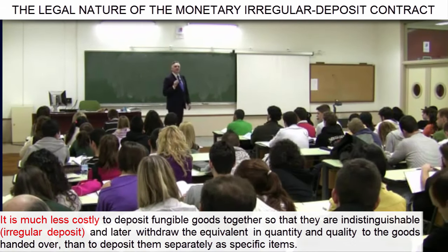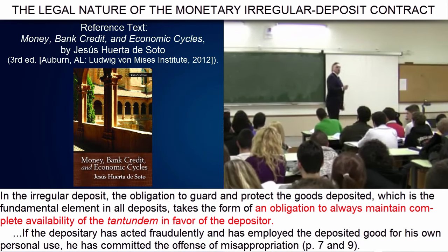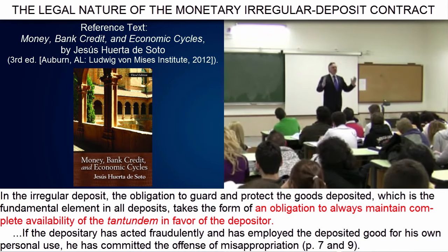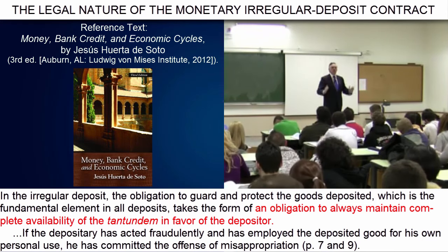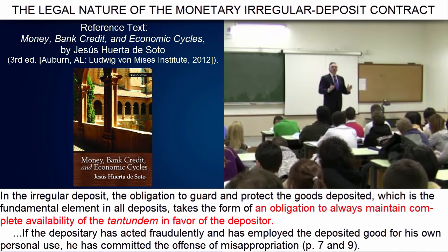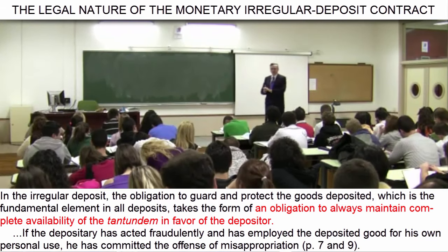What is the essential obligation of the depository of a fungible good? It should be crystal clear: to keep the entire tantundum at the disposal of depositors at all times — the equivalent in quantity and quality to what was received, whether oil, wheat, or money.